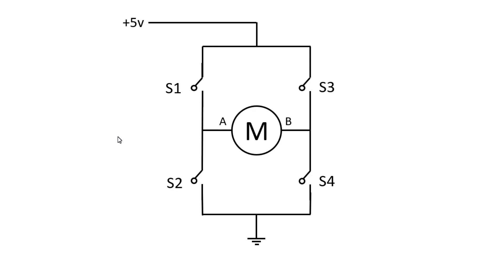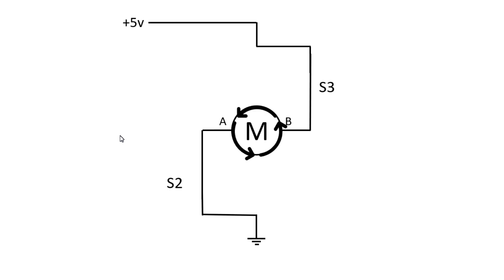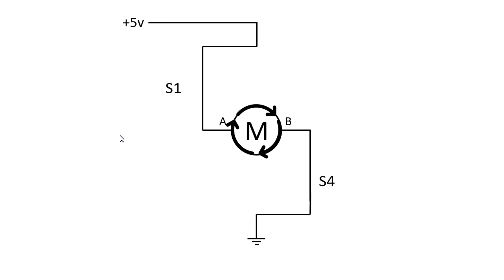Now what we will do is close switch three and switch two. In this case the current will flow through this direction to the ground. Now current is flowing from pin B to pin A, so the motor is now running in the anti-clockwise direction — before it was clockwise.